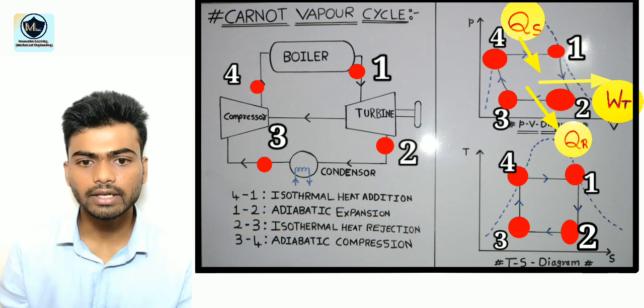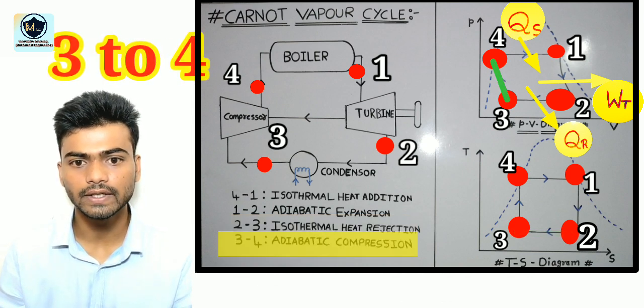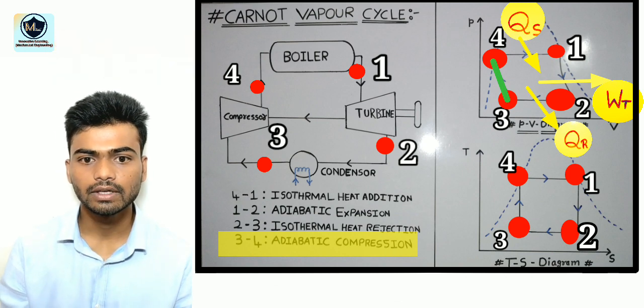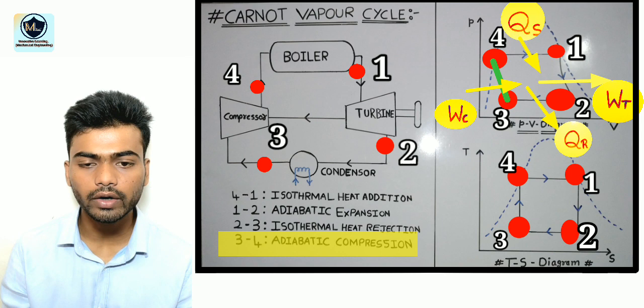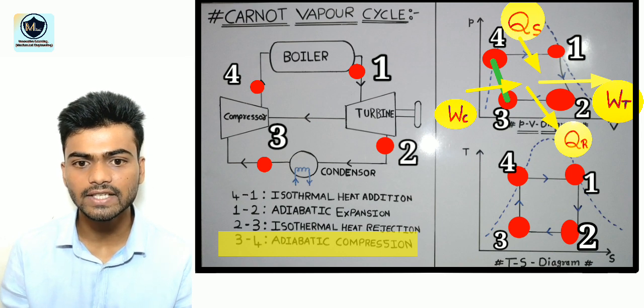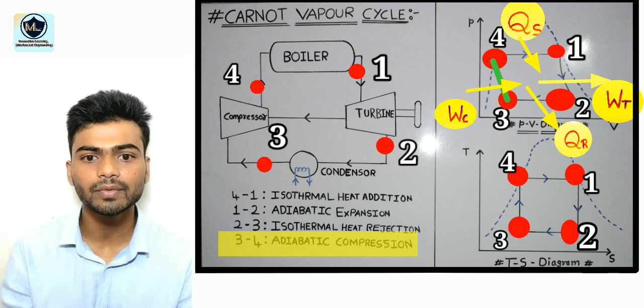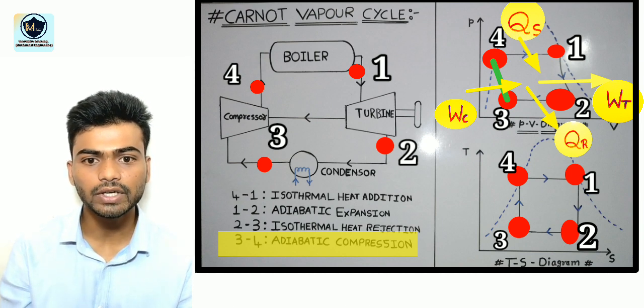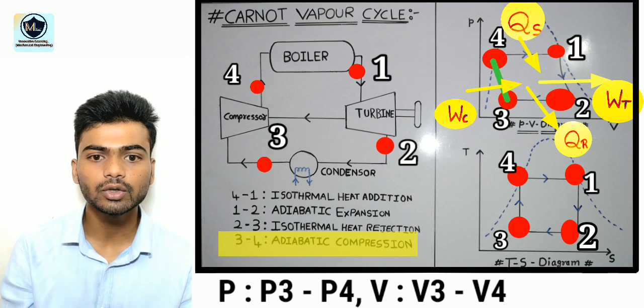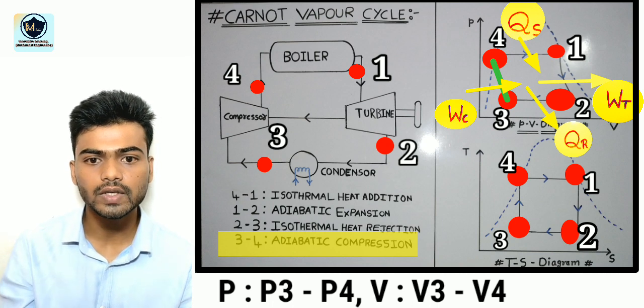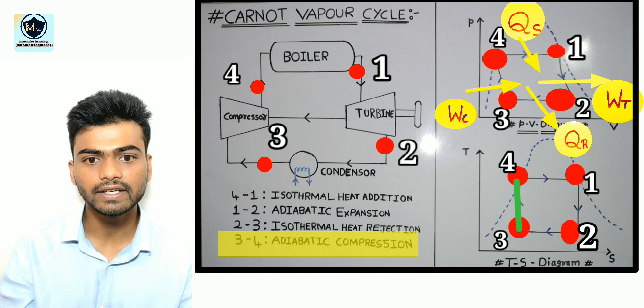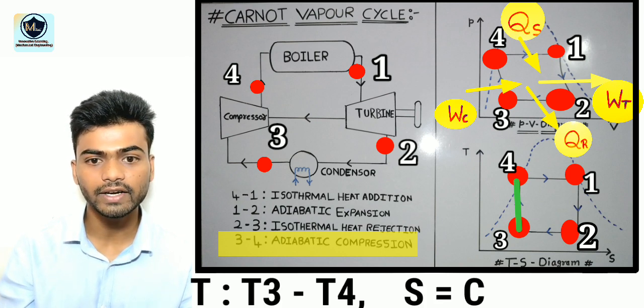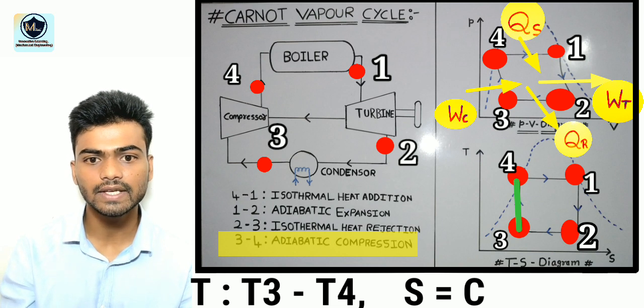In adiabatic compression process that is 3 to 4 steam is isentropically compressed in the compressor. Instead of supplying compressor work or the work required by the compressor from an additional source it is taken from the turbine work or work produced by the turbine. In PV diagram pressure rises from p3 to p4 where volume changes from v3 to v4 and in TS diagram temperature rises from t3 to t4 where entropy remains constant that is s3 is equals to s4 because it is an isentropic process.